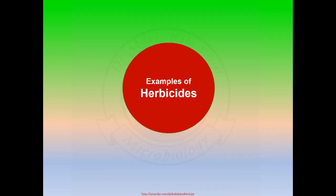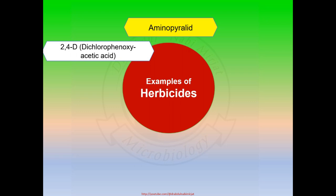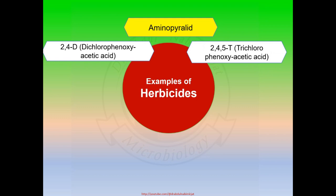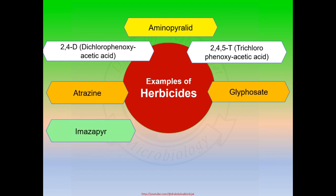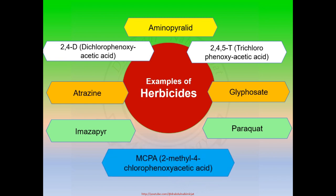Examples of different herbicides include Aminopyrrolid, 2,4-D (dichlorophenoxyacetic acid), 2,4,5-T (trichlorophenoxyacetic acid), atrazine, glyphosate, imazapyr, paraquat, and MCPA (2-methyl-4-chlorophenoxyacetic acid).